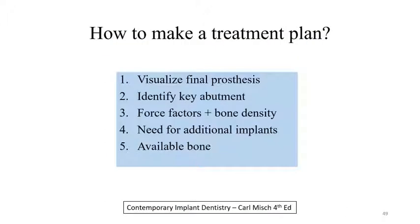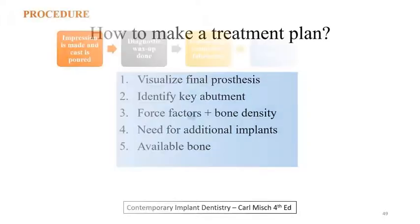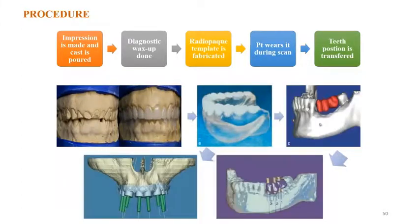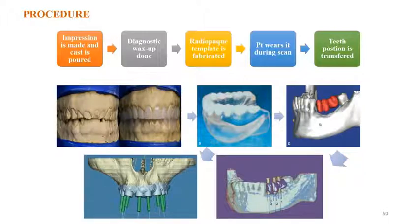For treatment planning, we first visualize the final prosthesis, identify the key abutment, identify force factors and bone density, and identify the need for additional implants and available bone. For the impression procedure, an impression is made, the cast is scored, and a diagnostic wax-up is done. Then a radiographic template is fabricated which the patient wears during a scan and the teeth positions are transferred; a surgical stent is prepared for guided implant placement.